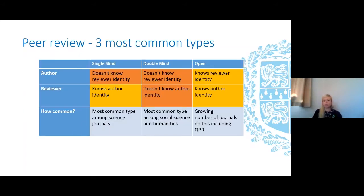The basis of peer review is the same across all journals, but there are different types in existence. The most common are: single blind peer review, where reviewers are aware of the author's identities but authors are never informed of the reviewers' identities; double blind, where neither author nor reviewer is aware of each other's identities; and open peer review, where authors and reviewers are aware of each other's identity. This is the case for Quantitative Plant Biology, where the reviewer's reports will be published alongside the papers. The type of peer review used by a journal should be clearly stated in the policy pages on the journal's website.